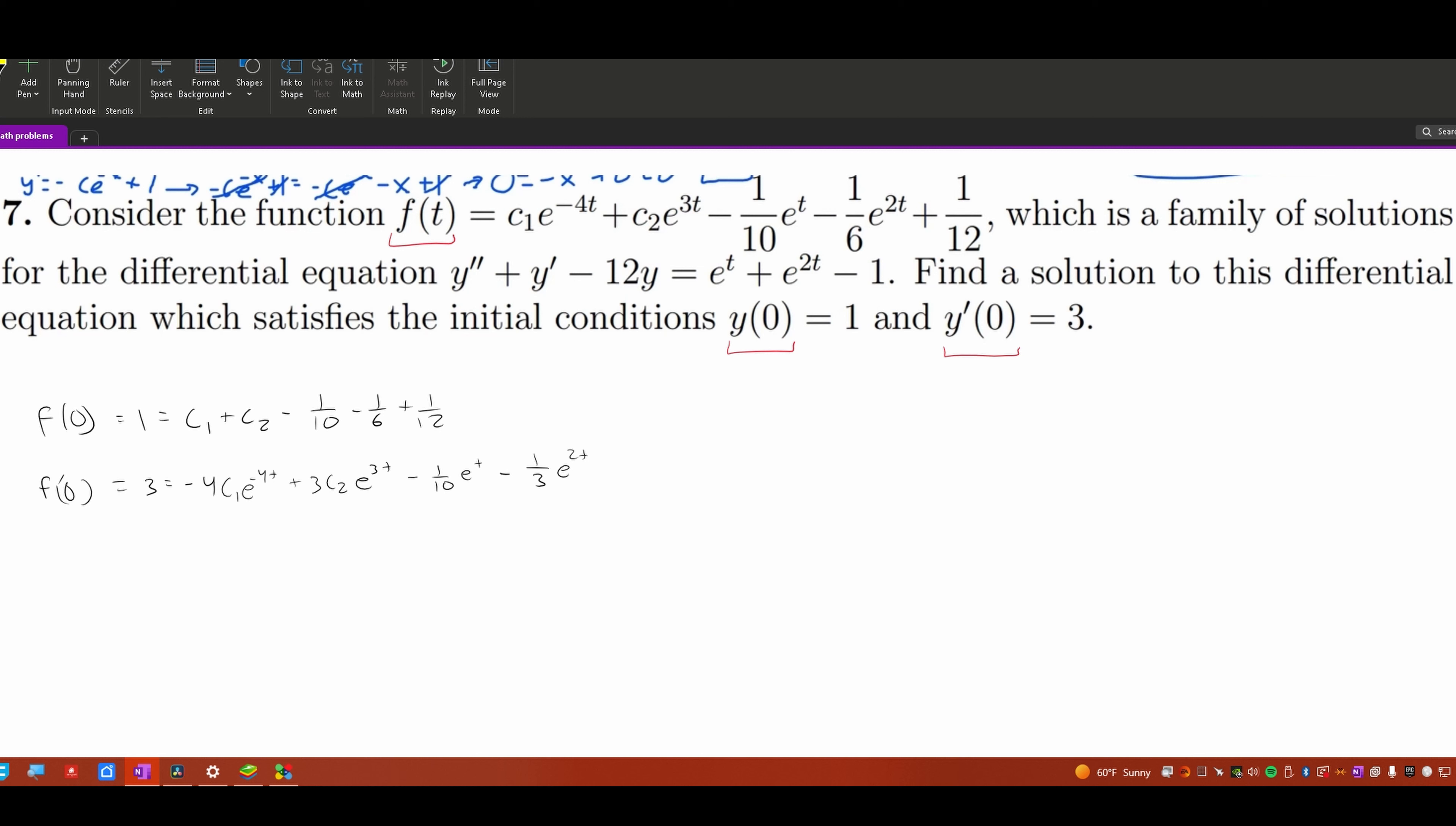So now let's plug in our values. So this 3 is really going to be equal to, and we're plugging in 0 still, so not too much is changing. We're going to have negative 4c1, and then plus 3c2 minus 1 over 10 minus 1 over 3. So these things are what we're going to have to look at, and now I'm going to simplify them and move all of the c's onto one side.